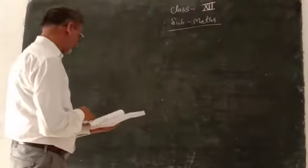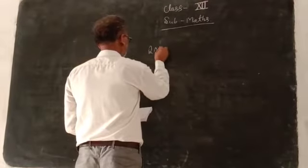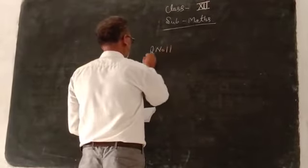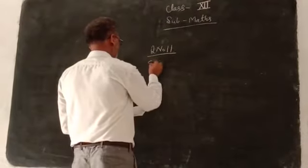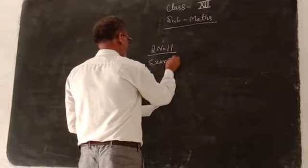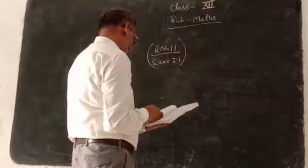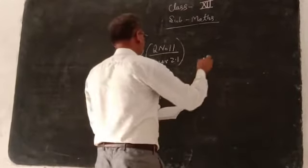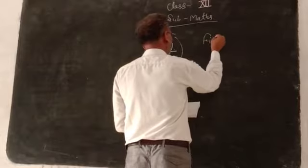Now, we take the question number 11, question number 11 of exercise 2.1. The question says, find the values of the following. In short, it's given before the question: find the values.